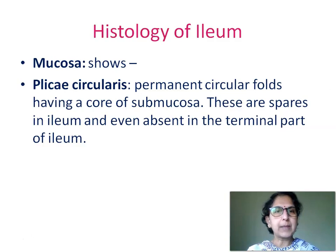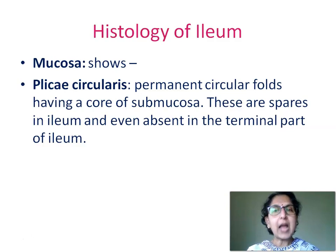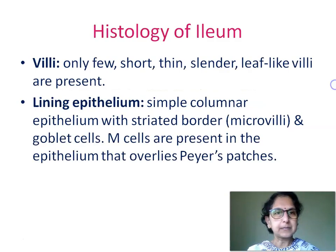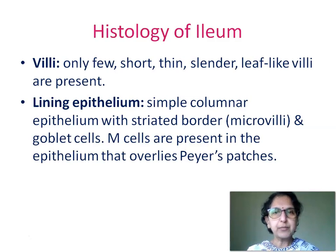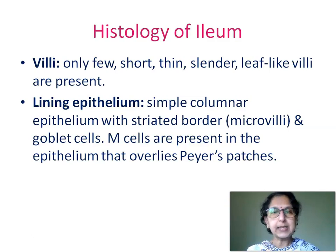Mucosa shows plicae circulares — permanent circular folds having a core of submucosa — which are sparse in the ileum and even absent in the terminal part of ileum. Villi here are only a few short, thin, slender, leaf-like villi. Lining epithelium is simple columnar epithelium with striated border due to the presence of microvilli and goblet cells. M-cells are present in the epithelium overlying the Peyer's patches. The number of goblet cells in the lining epithelium increases gradually from duodenum through jejunum up to the ileum.